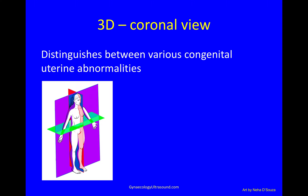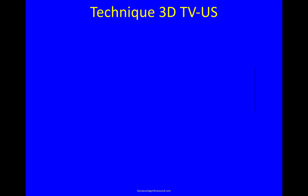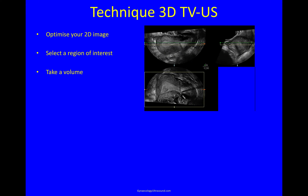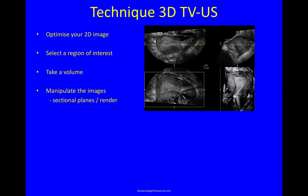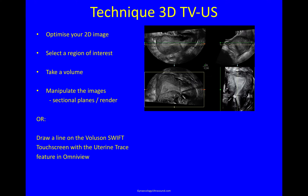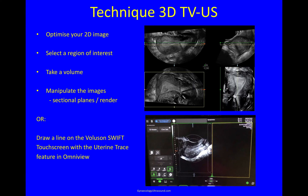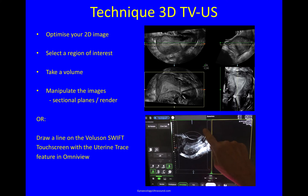In this diagram the plane shown in purple is the coronal plane. The technique for taking a 3D scan is to optimize your 2D image first — this is very important. Then you select a region of interest, take a volume, and that is displayed on screen in the longitudinal plane, the transverse plane, and the coronal plane. You can then manipulate these images or render them for more detail. This is the rendered coronal view, or you can draw a line on a touch screen using the uterine trace feature in OmniView.